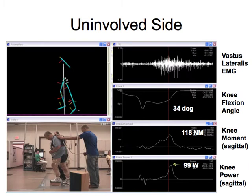We can see what the loads are at the knee at this instant in time of the step-up. The knee flexion angle is around 34 degrees. The quadriceps activation is quite high, and that's resulting in a 118 newton meter knee extension moment.